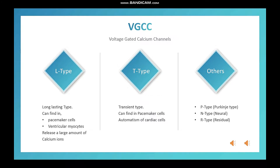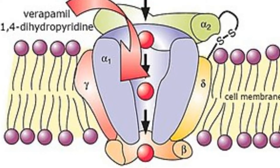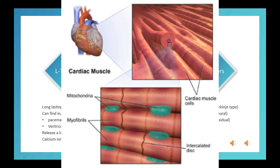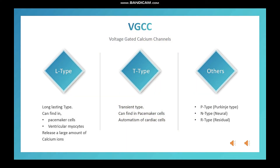There are several types of voltage-gated calcium channels among cardiac cells, but mainly two types are important for today's lesson. First, L-type — we call it long-lasting type. You can find them in pacemaker cells and ventricular myocytes. Those L-type calcium channels release a large amount of calcium ions when activated.